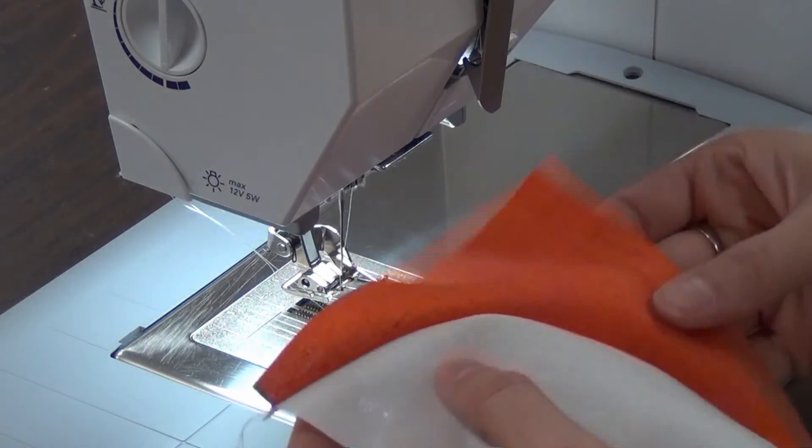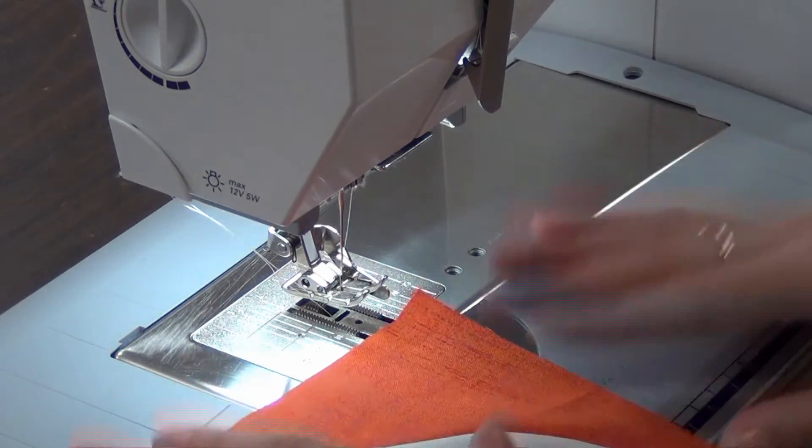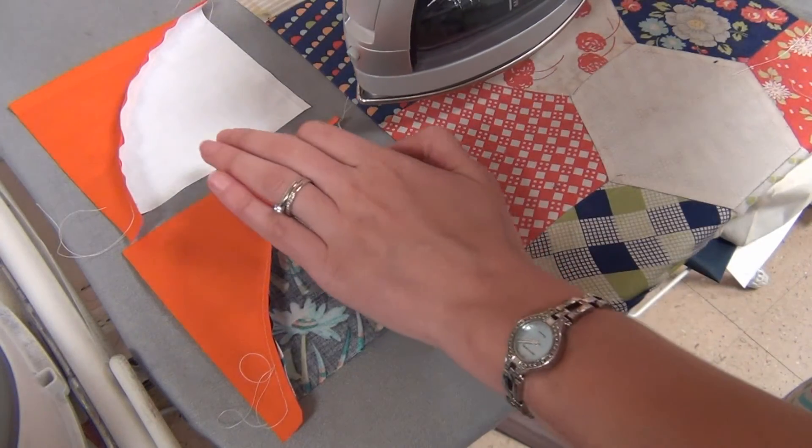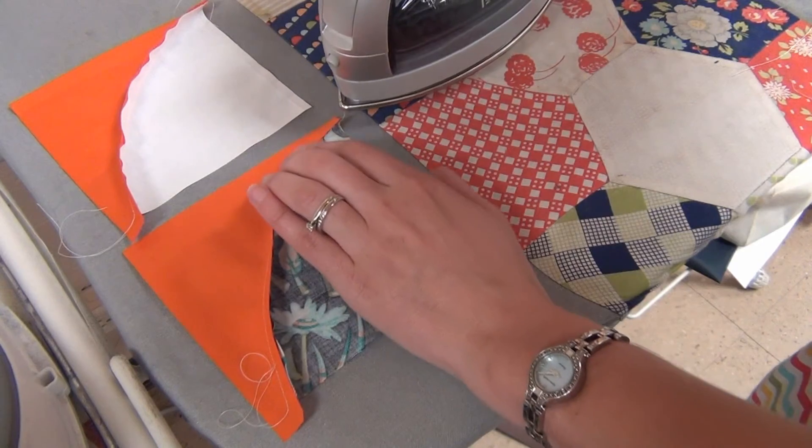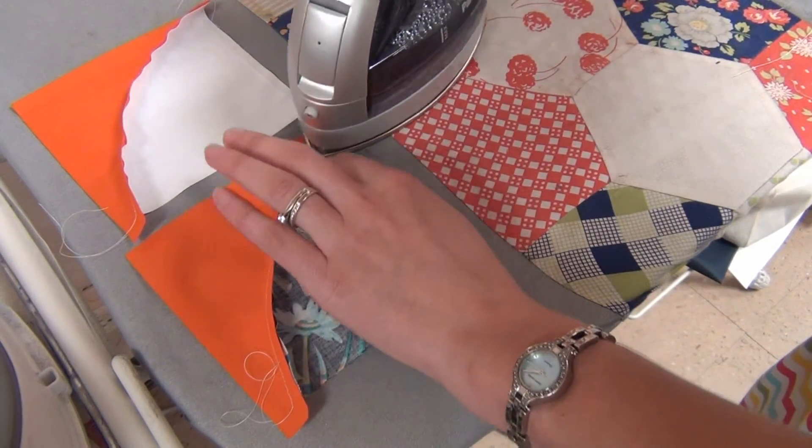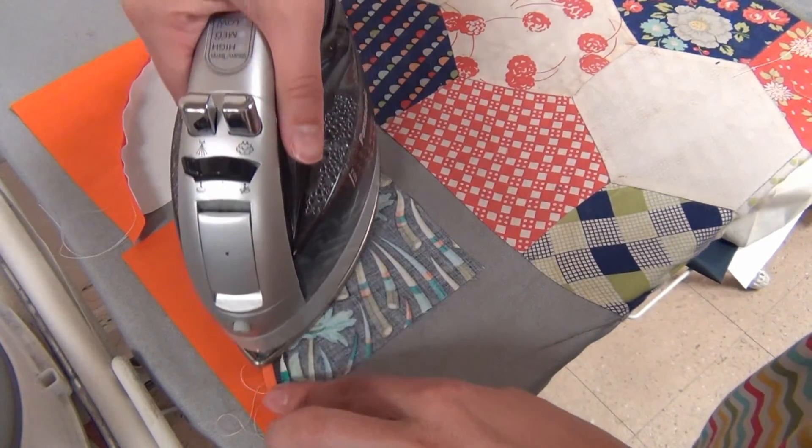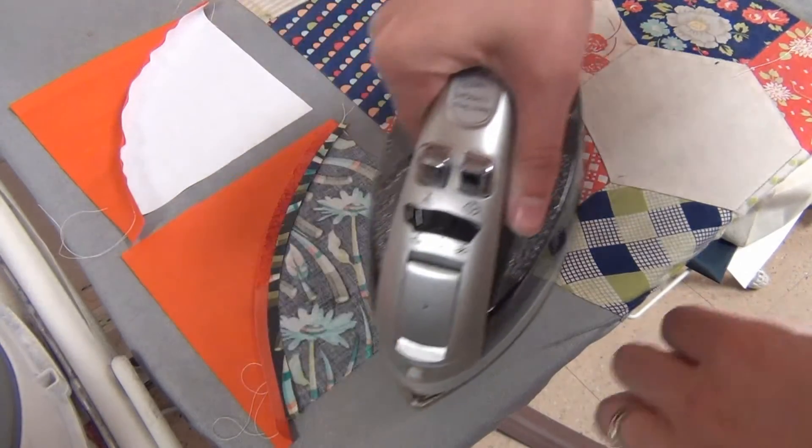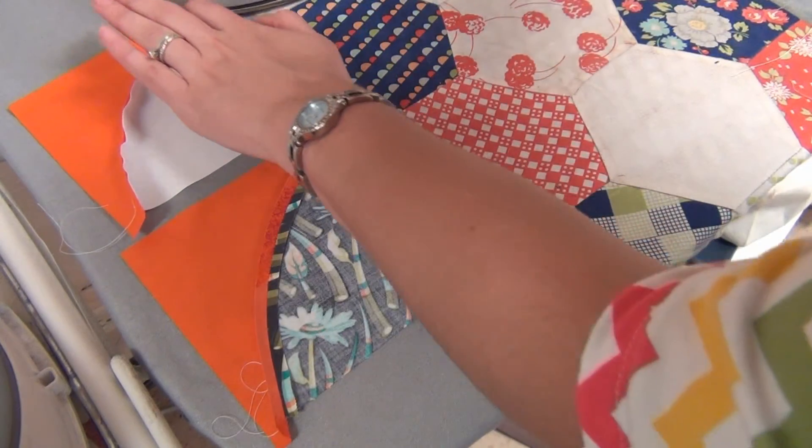And so there's one half square triangle block. Now I'm ready to square this up. These blocks are going to be pressed open to reduce the bulk when you go to sew all of them together. So both colors of your half square triangles are pressed open.